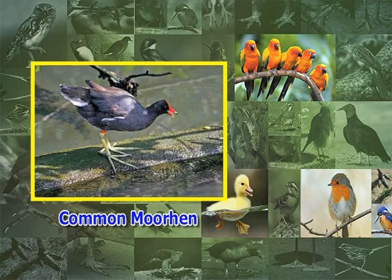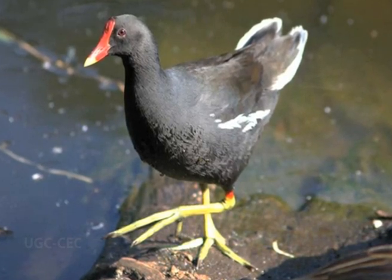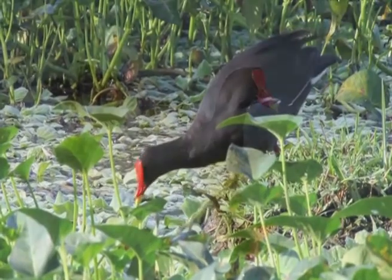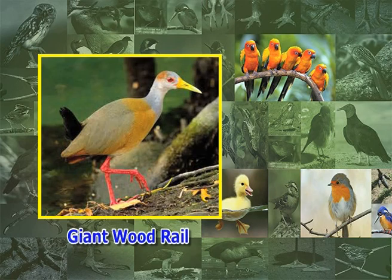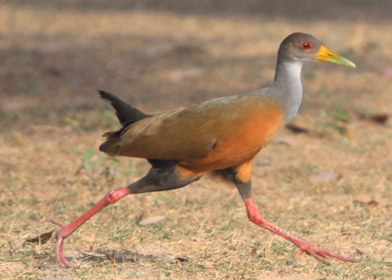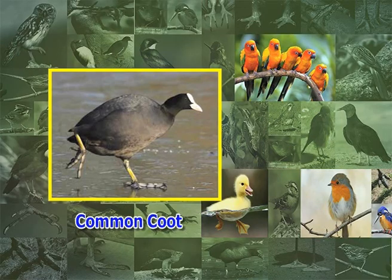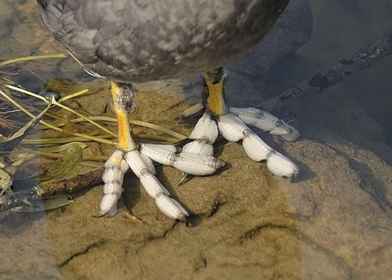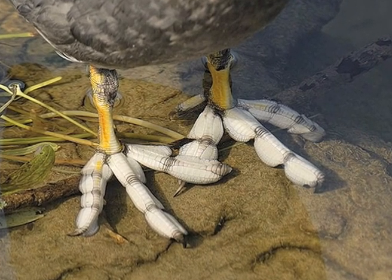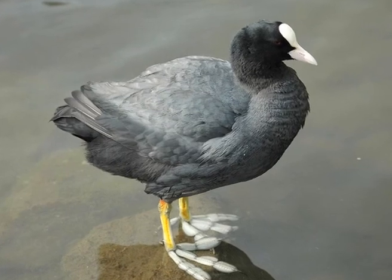Tenth, the common moorhen: moorhens have shorter legs than jacanas but very similar feet — slightly shorter but with thin toes; they occur in aquatic areas with floating vegetation and swim very well. Eleventh, the giant wood rail: the rails have strong long legs equipped with robust long toes, shorter than in jacanas, and can swim if necessary. Twelfth, the common coot: coots have relatively short legs, but their feet are unique — each toe is equipped with a series of fleshy lobes and a flat underside, allowing the bird to swim but also to run and walk on mud.